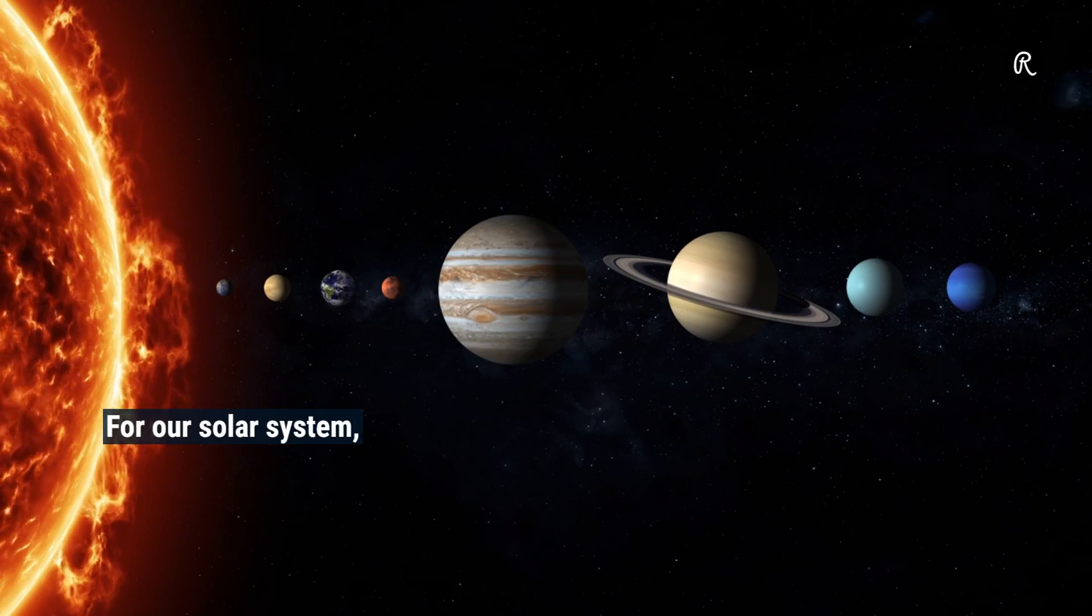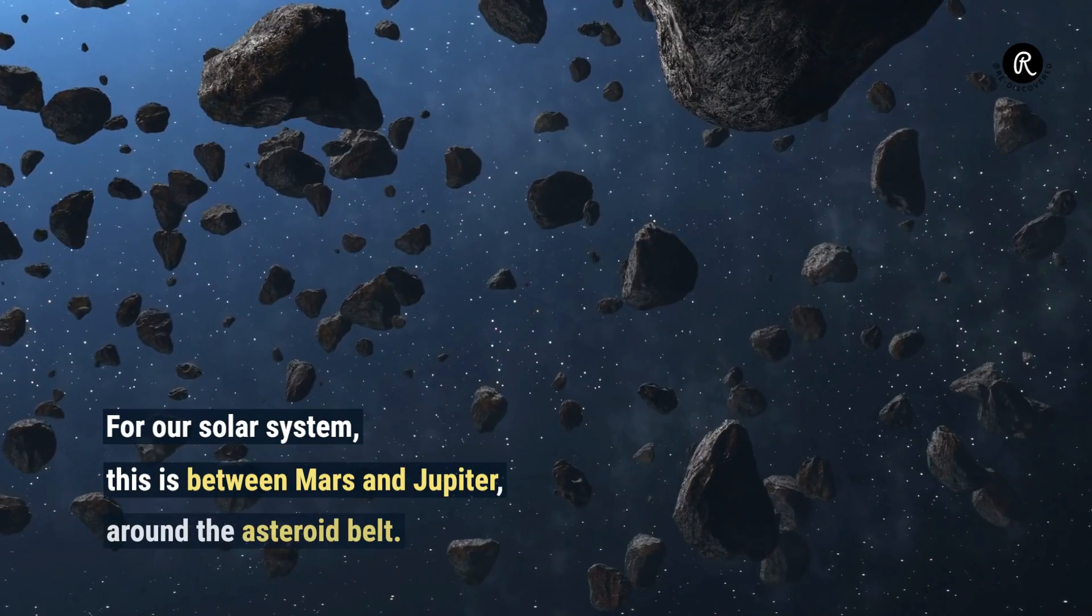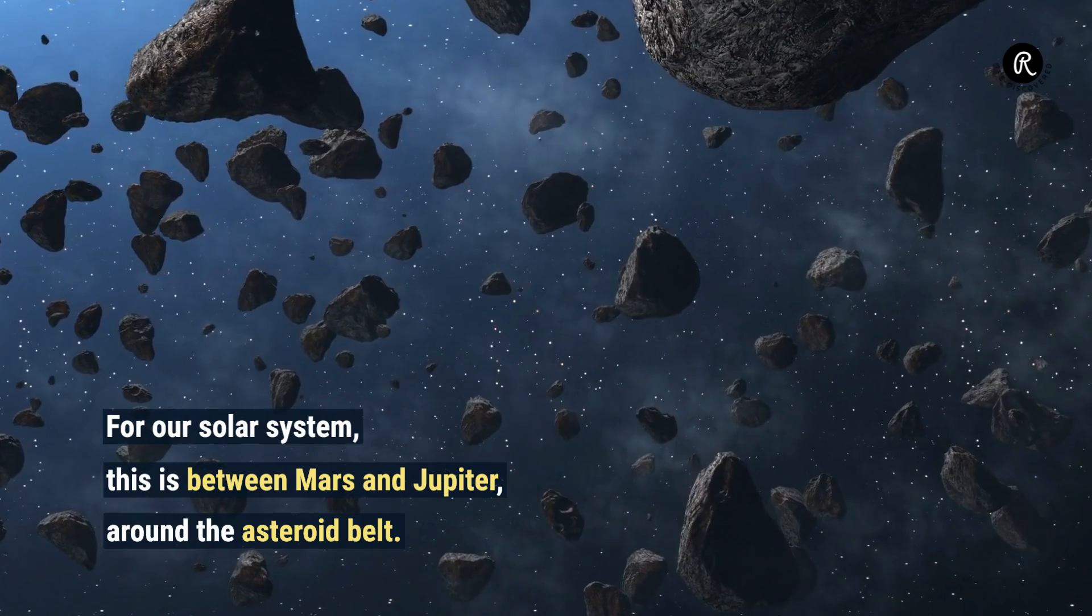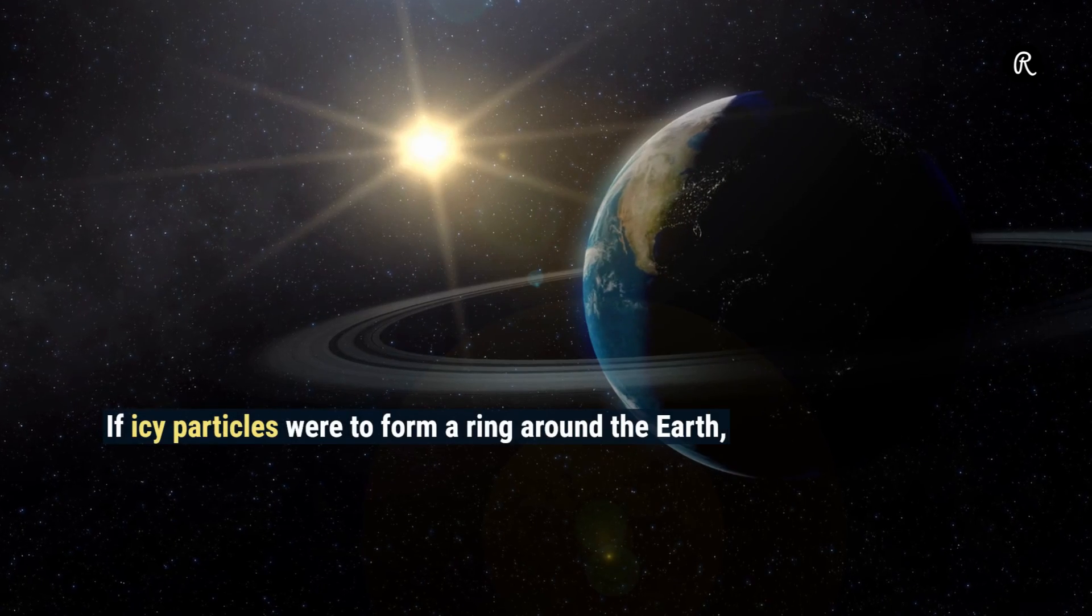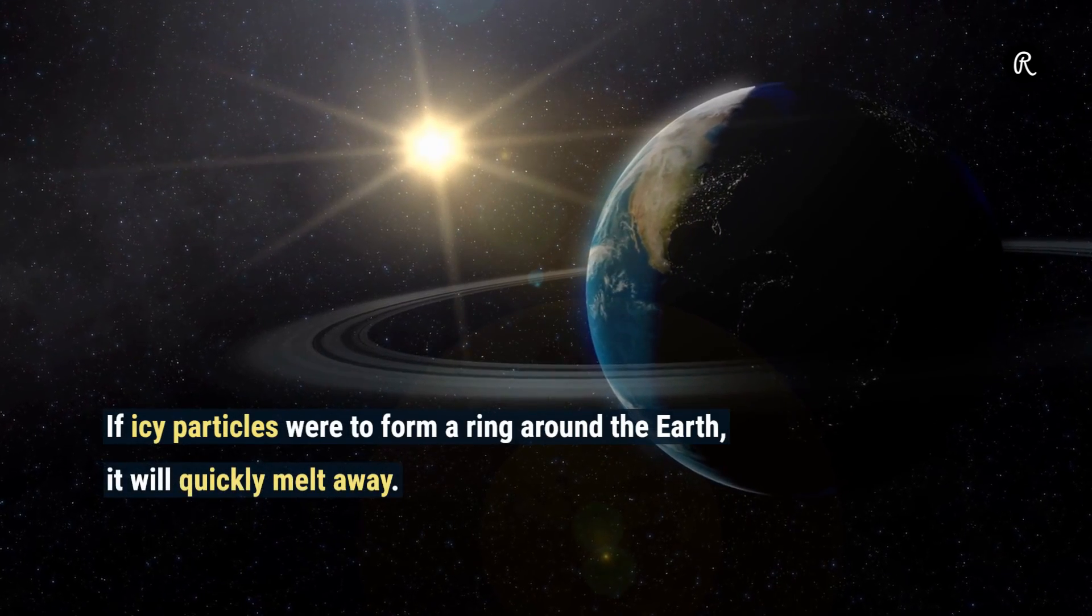For our solar system, this is between Mars and Jupiter, around the asteroid belt. If icy particles were to form a ring around the Earth, it will quickly melt away.